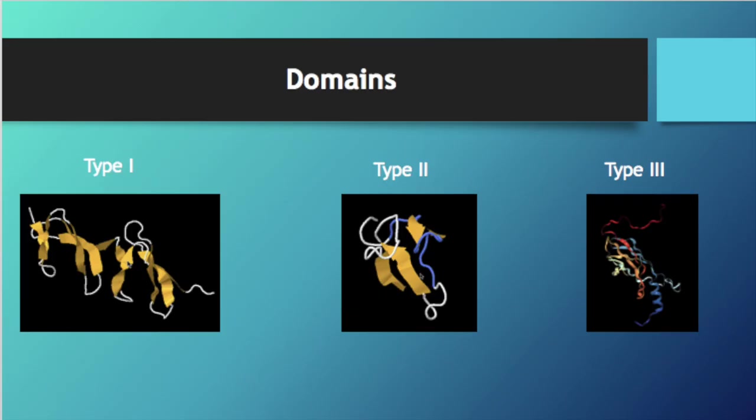Shown here are the three domains that compose Fibronectin. All three modules are composed of two anti-parallel beta sheets resulting in a beta sandwich. However, type 1 and type 2 are stabilized by intra-chain disulfide bonds, while type 3 modules do not contain any disulfide bonds.